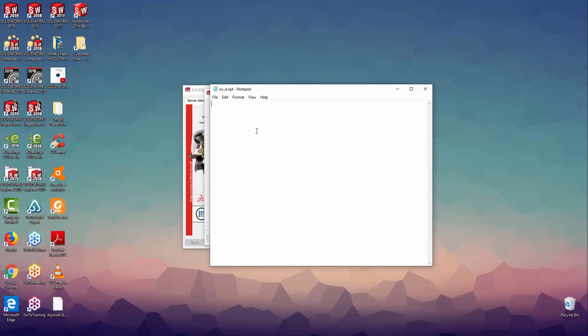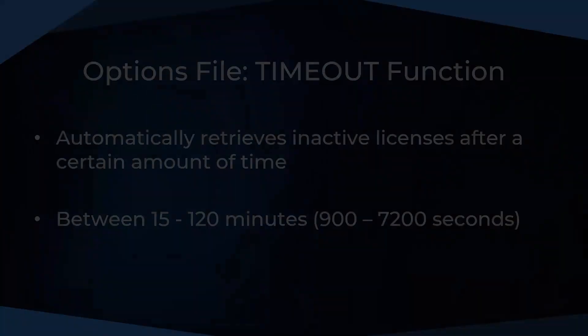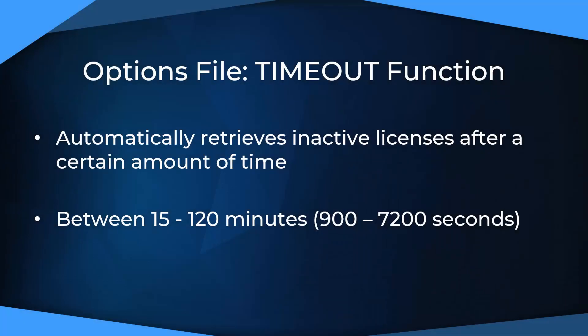There are many different functions that we can use, but we'll go through two of the most common ones. The first function is the TIMEOUT function, which controls exactly how long a computer will be allowed to hold on to a specific license once the program detects that the computer is inactive. The timeout value can be any number of seconds between 15 minutes and two hours, and a specific product such as SOLIDWORKS PDM, Composer, or SOLIDWORKS Inspection can be defined as the license to be set up within the timeout function.